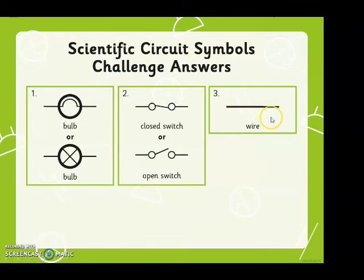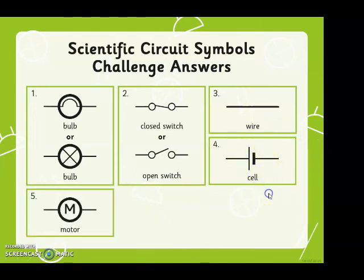Number three, a wire. A wire is always a straight line. Number four, a cell. Number five, a motor. A circle with a big M inside of it.